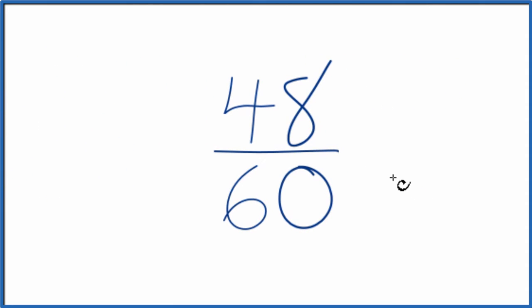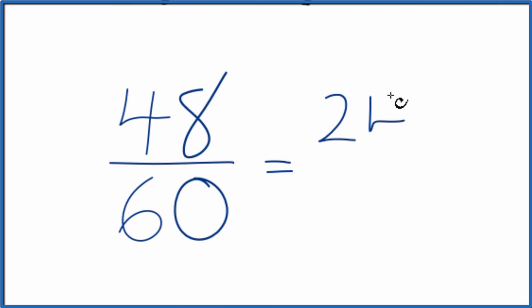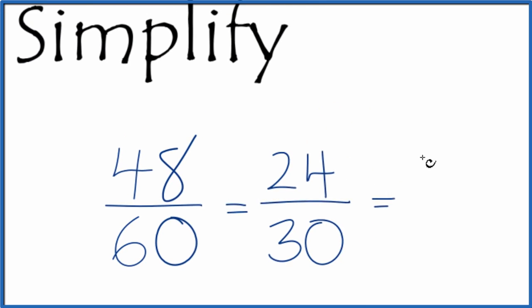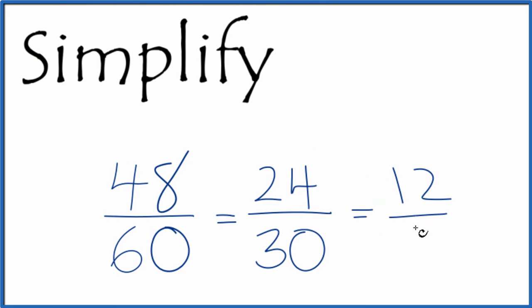There is one more way to do it. Because these are both even, we could just divide them both by two. So 48 by two is 24, 60 by two is 30. And those are even, so we could divide by two again. That's 12 over 15. And then this could be reduced down to four fifths a little bit easier.